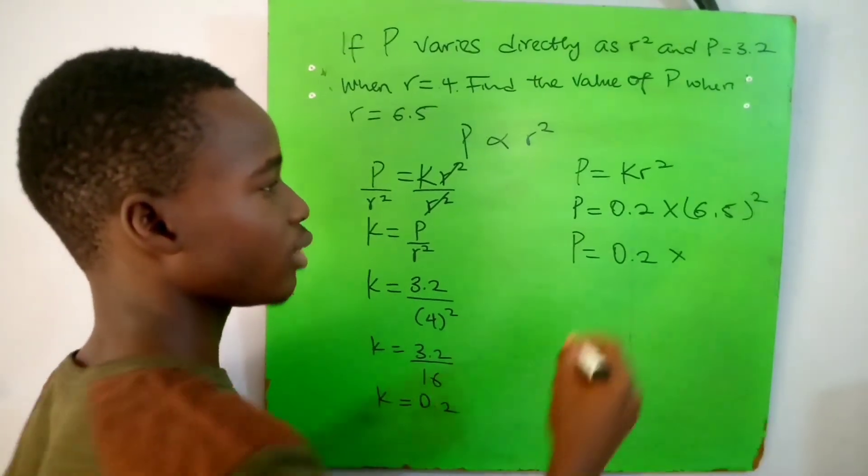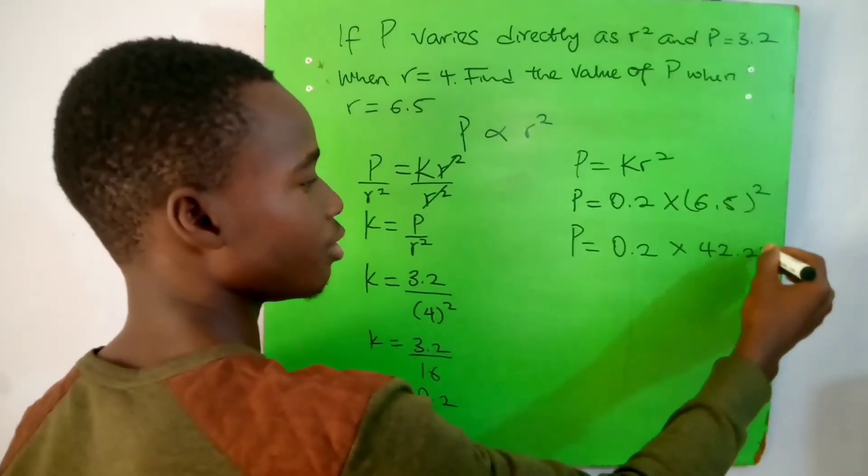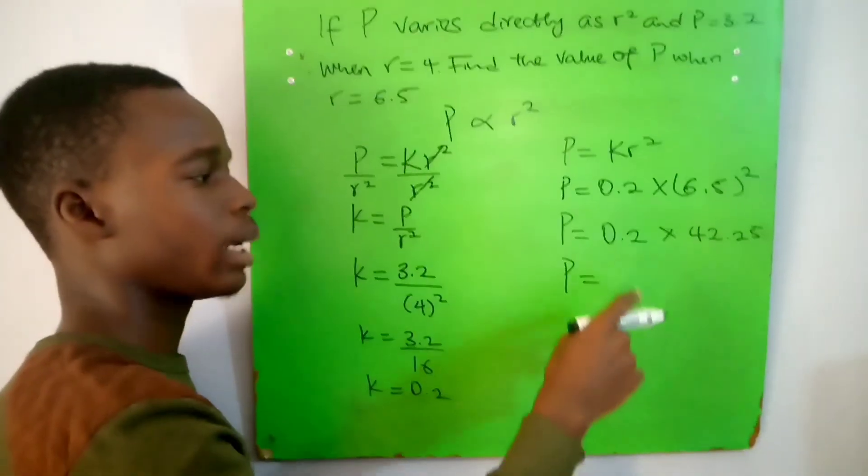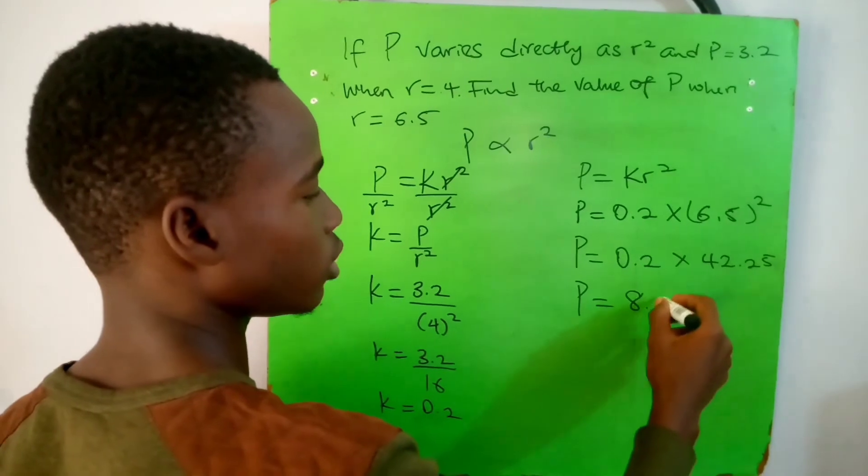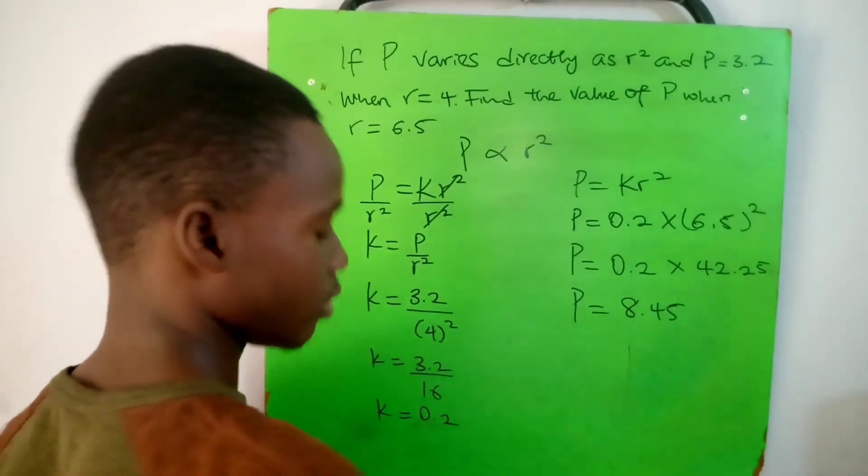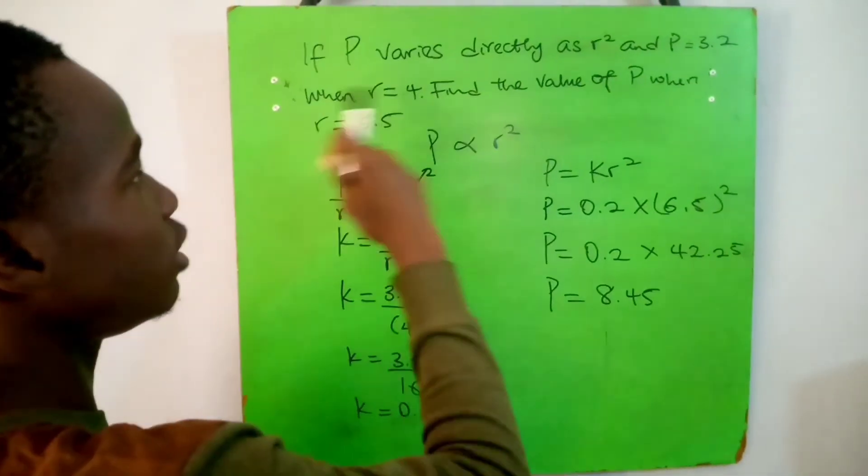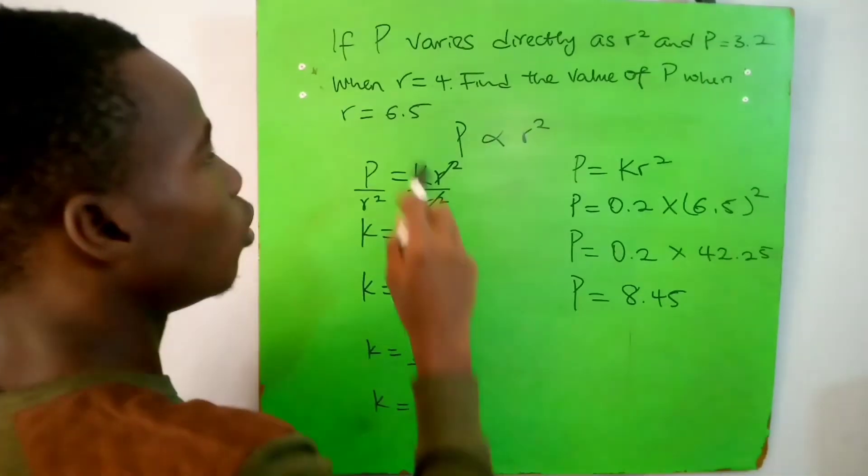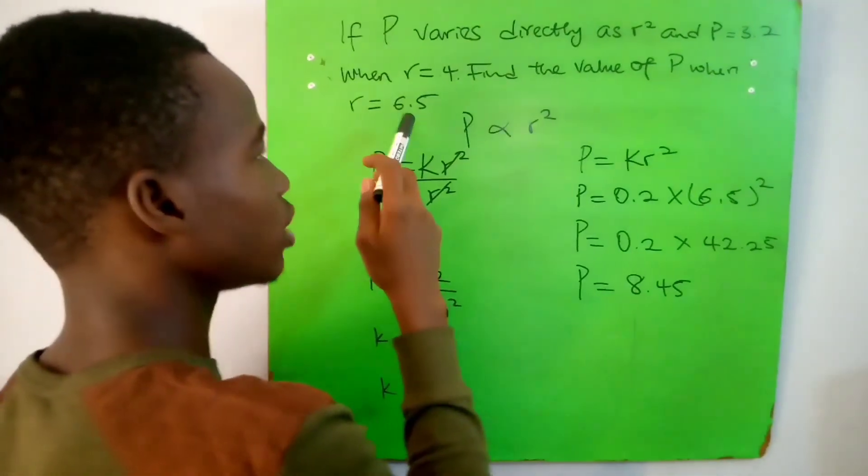P equals 0.2 times 42.5, which equals 8.45. So this is the value of P. If P varies directly as r squared and P equals 3.2 when r equals 4, the value of P when r equals 6.5 is 8.45.